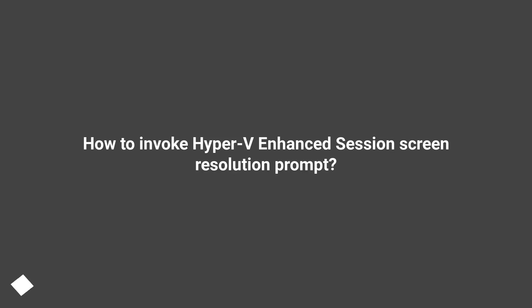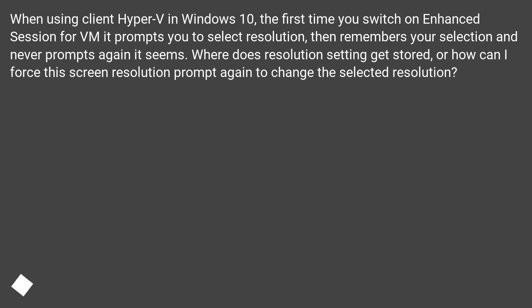How to invoke the Hyper-V Enhanced Session screen resolution prompt. When using client Hyper-V in Windows 10, the first time you switch on Enhanced Session for a VM it prompts you to select resolution, then remembers your selection and never prompts again. Where does the resolution setting get stored, or how can you force this screen resolution prompt again to change the selected resolution?